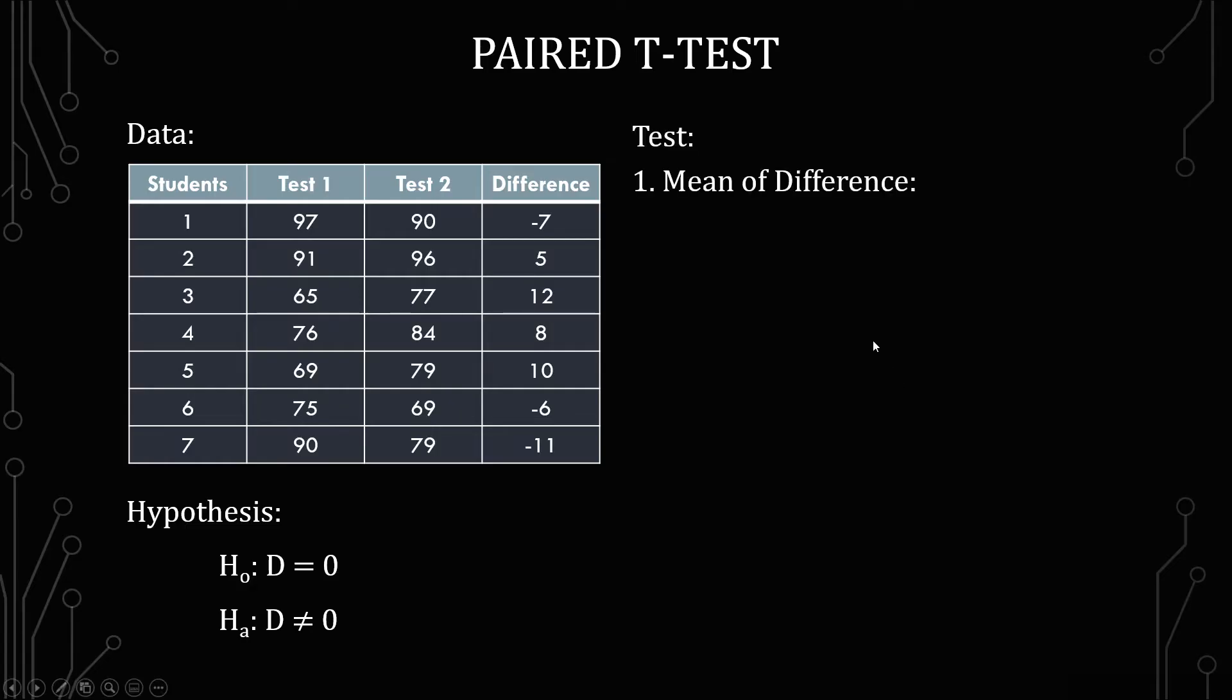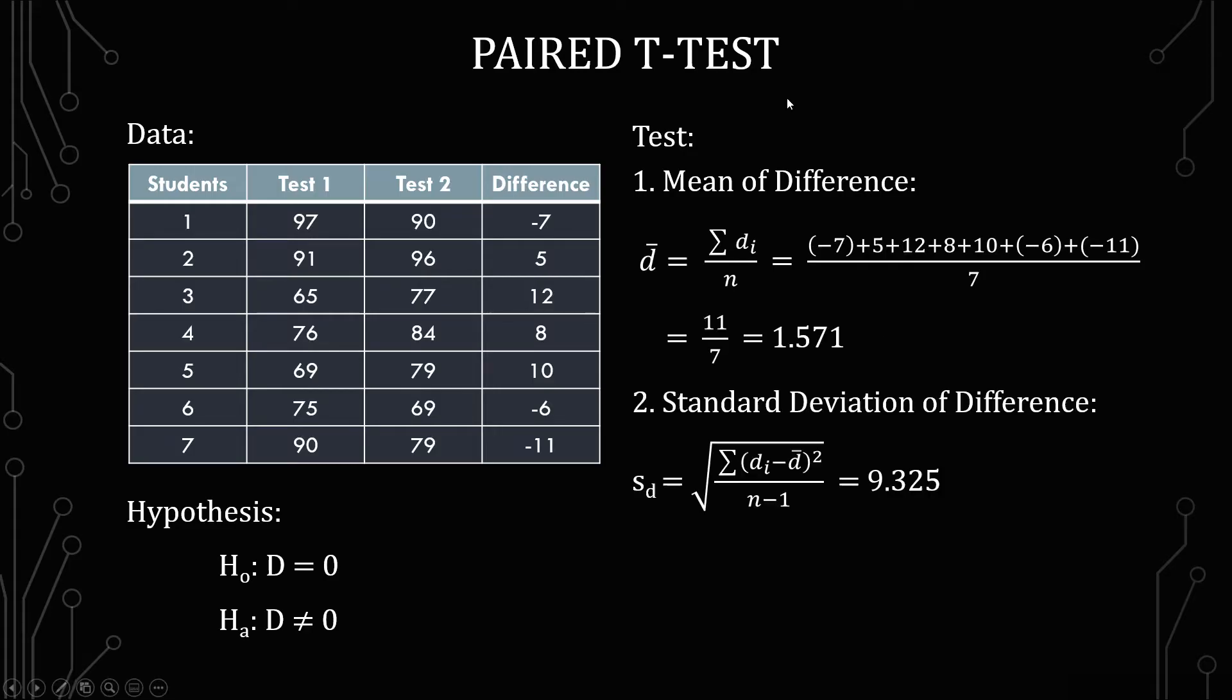The first thing you want to do is calculate the mean of the difference. This gives us an average of 1.571. Next is to calculate the standard deviation of the difference. Just like how we calculate every other standard deviation, you do the square root of the sum of each difference minus the average of the differences, and then that quantity squared, divided by n minus 1. When you do that you get 9.325.